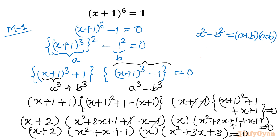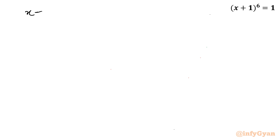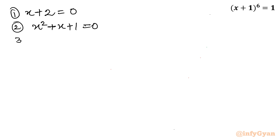So there are 4 brackets: the first is x plus 2, the second is x squared plus x plus 1, the third is x, and the fourth is x squared plus 3x plus 3, all equal to 0. Setting each bracket to zero: equation 1 is x plus 2 equal to 0, equation 2 is x squared plus x plus 1 equal to 0, equation 3 gives x equal to 0 directly, and equation 4 is x squared plus 3x plus 3 equal to 0.